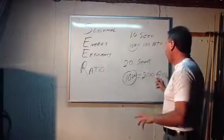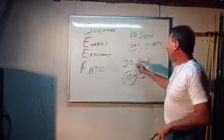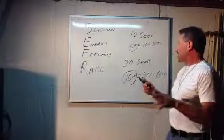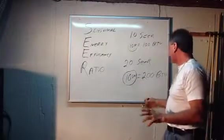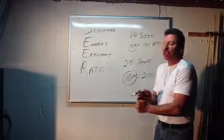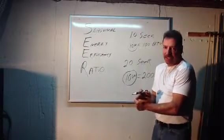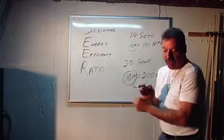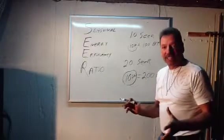You can see right off the bat, by having a higher SEER number, he's getting twice the amount. His equipment's going to shut off a lot faster, and when the equipment's not running, that's when you get your efficiency.